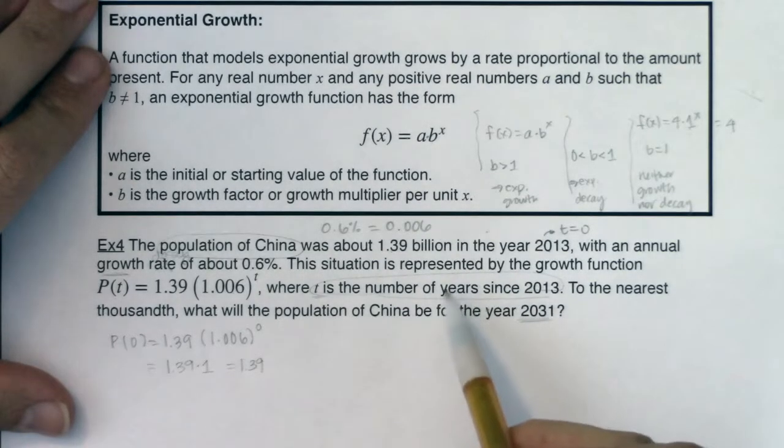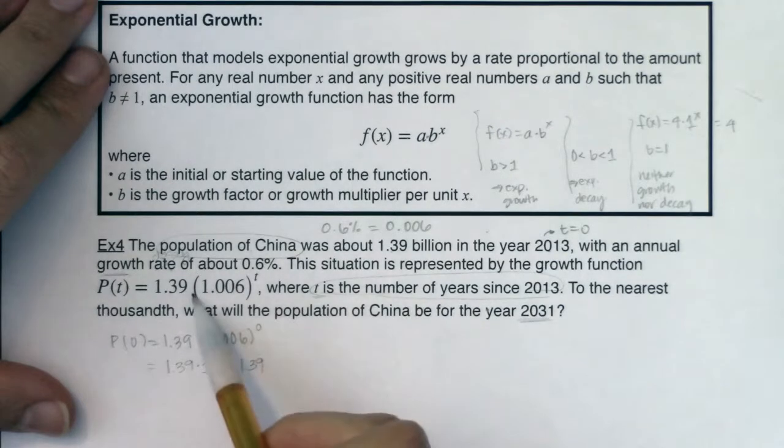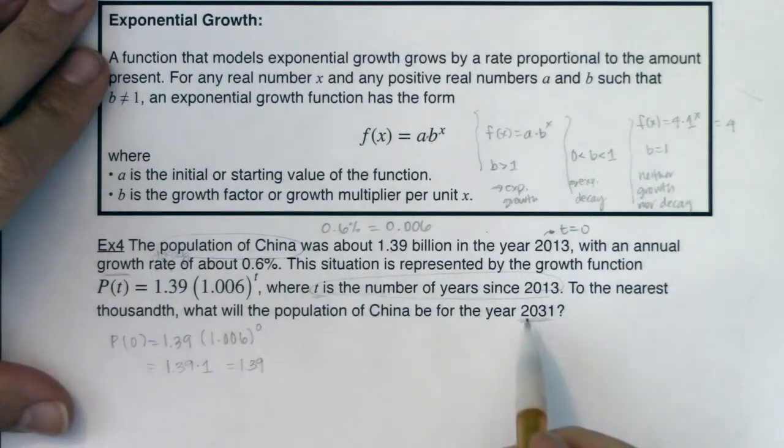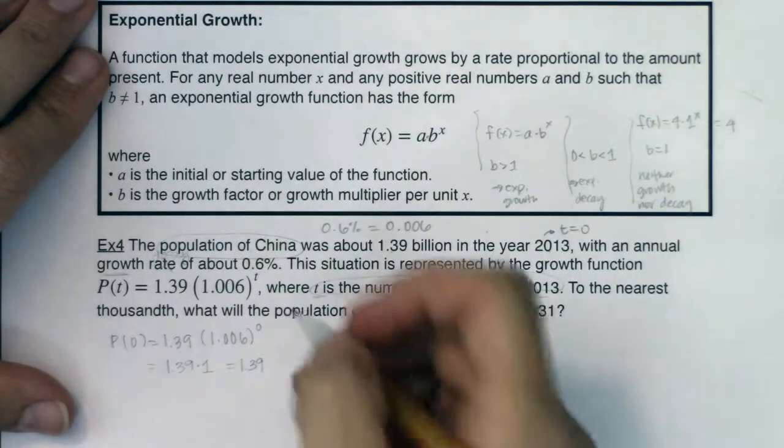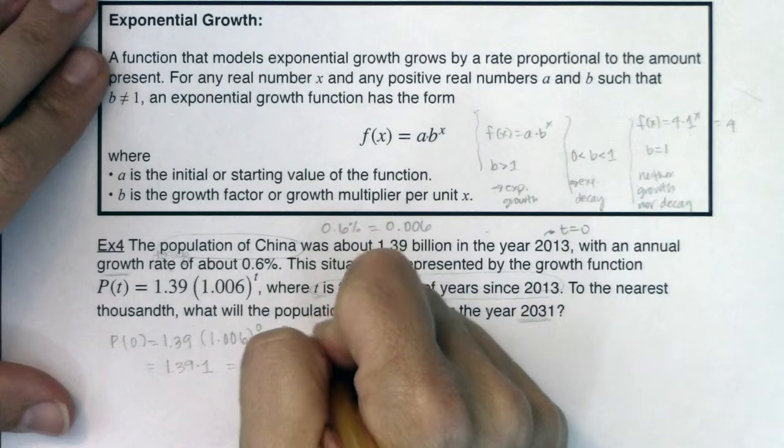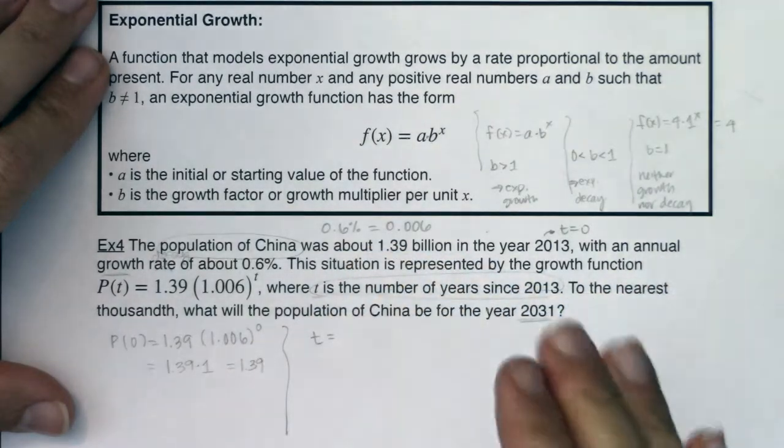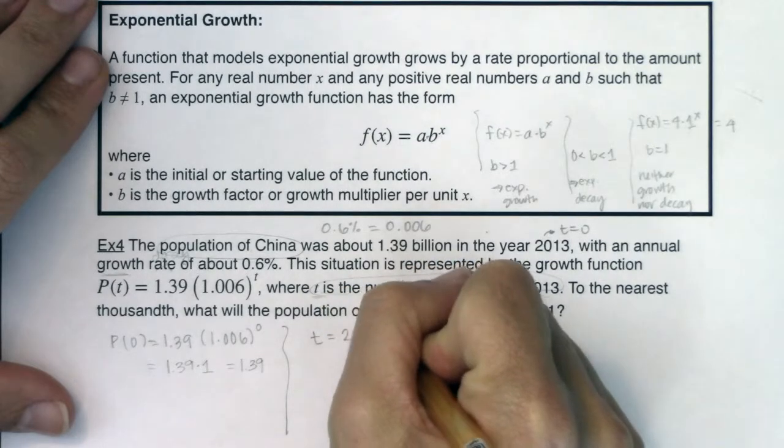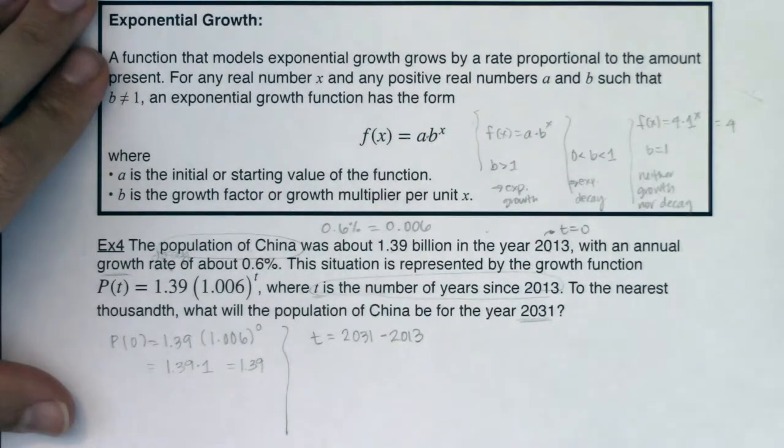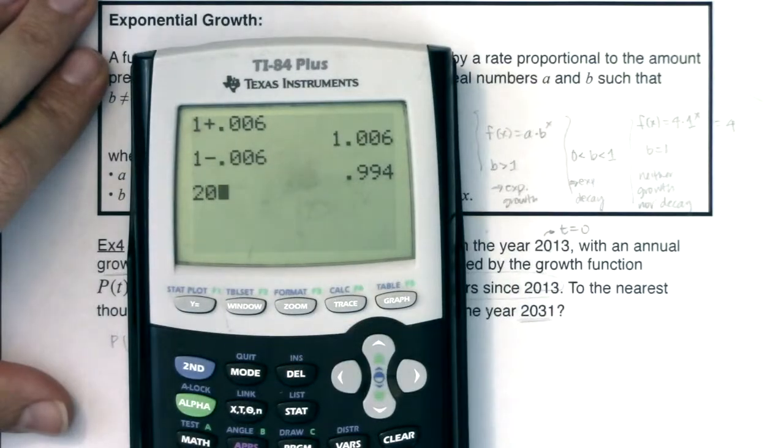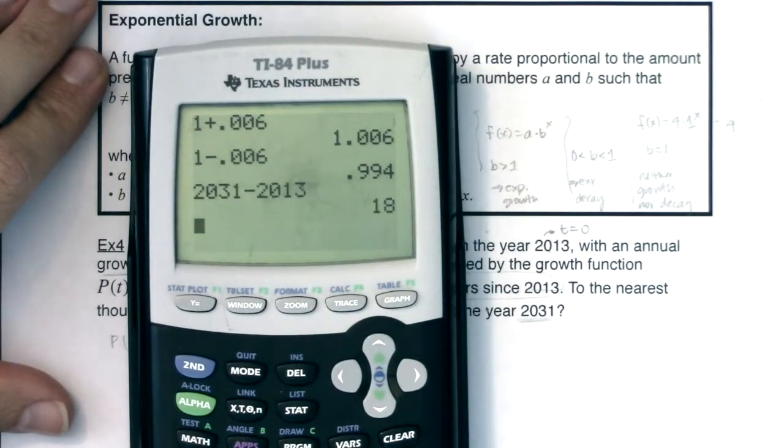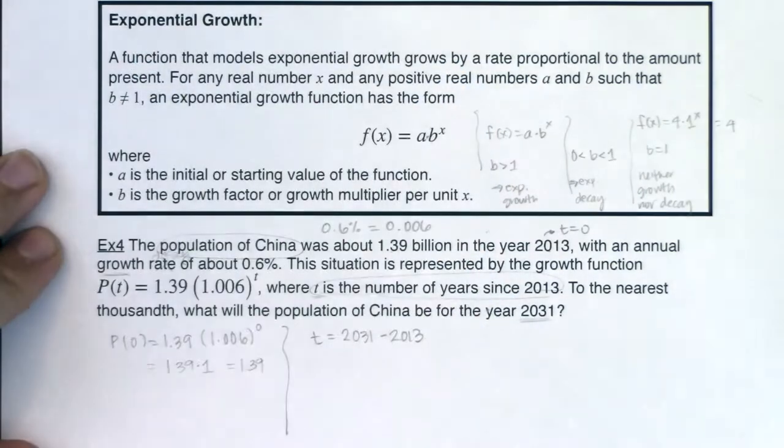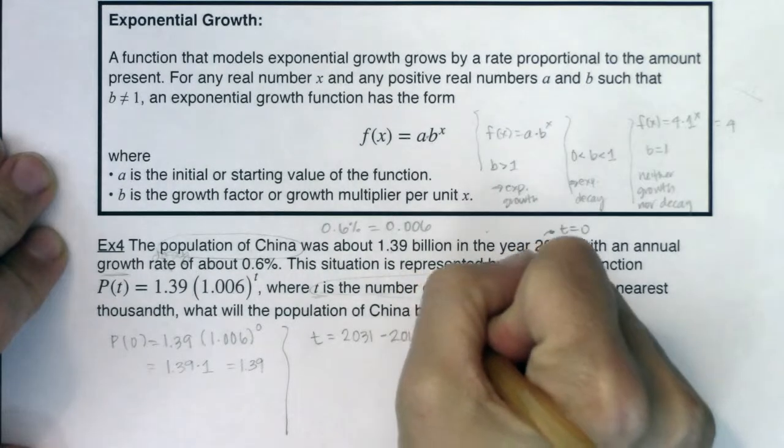Now this said to the nearest thousandth, what will the population of China be for the year 2031? Well, 2031, is that an x value or a y value? Or in this case, I could say, is it a time value or is it a population value? And that's a time value. But there's one little catch. I do have a base year. So to find out my t value, I don't want to plug 2031 in here. I want to take my current year and subtract my base year. And let's see what we're getting. It looks like the year 2031 is 18 years after 2013. So this will be 18.